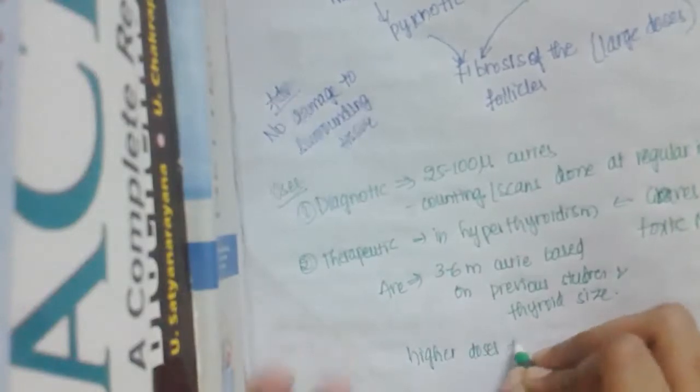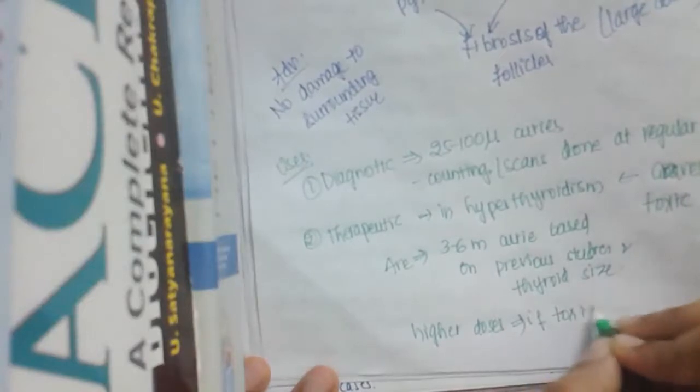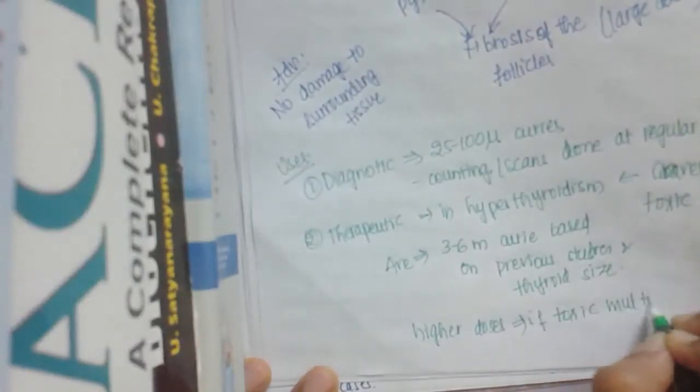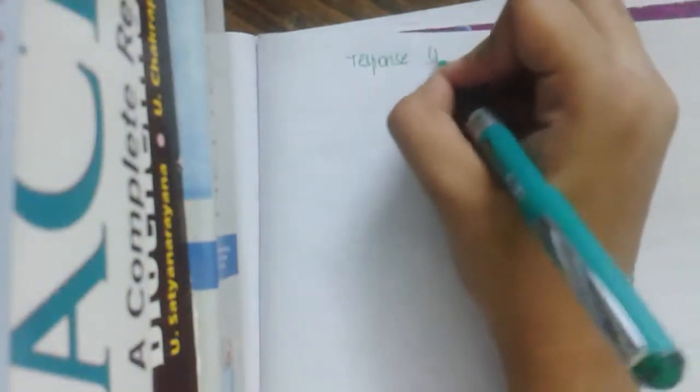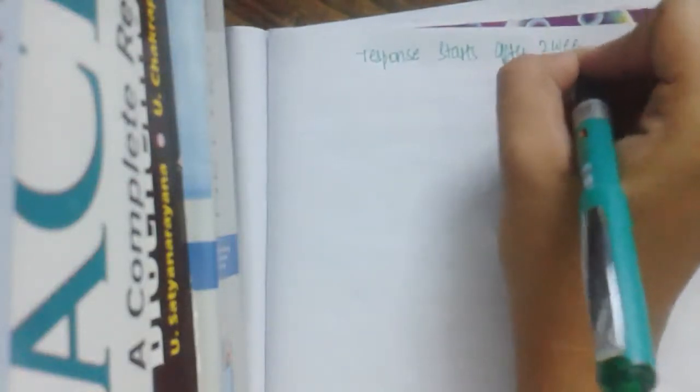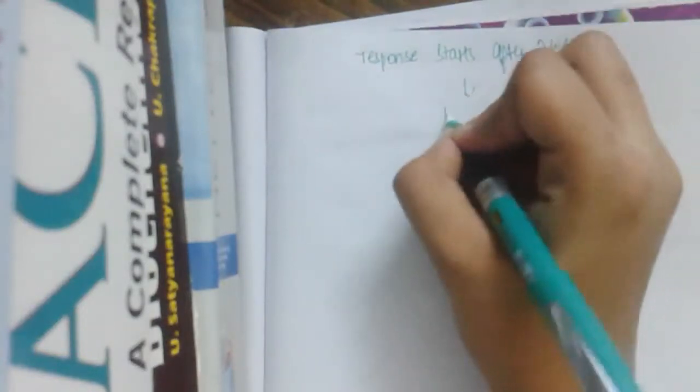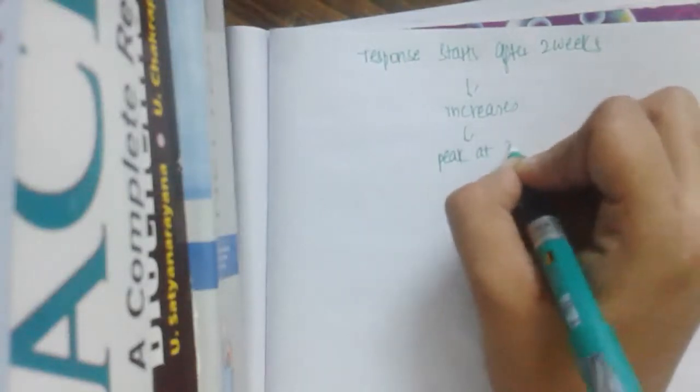If we see toxic multinodular goiter, higher doses are given. Here to start with, response starts after two weeks and then increases, and then peaks at three months, and then again evaluate thyroid status.